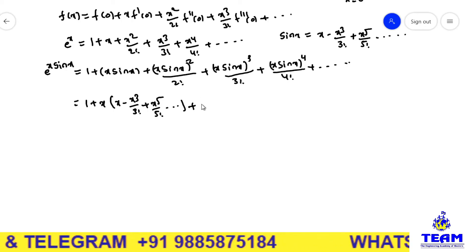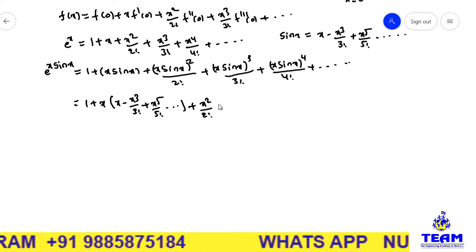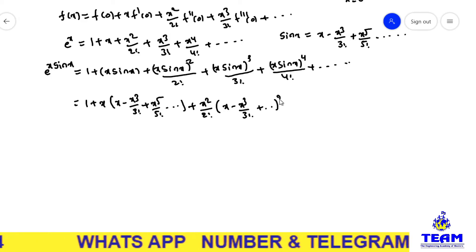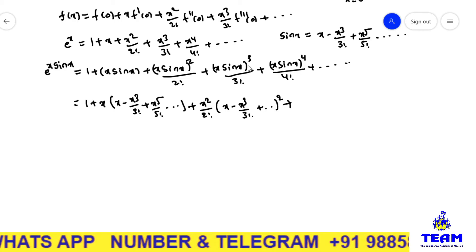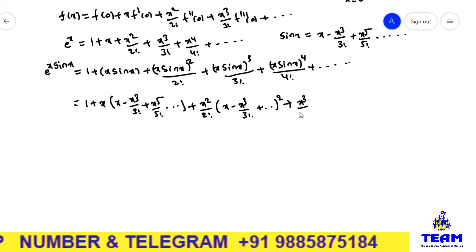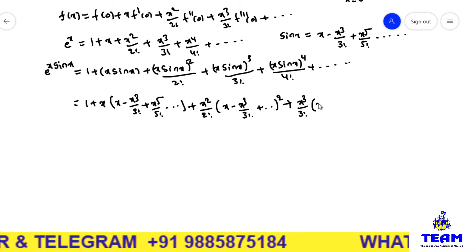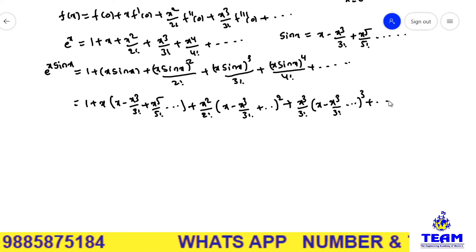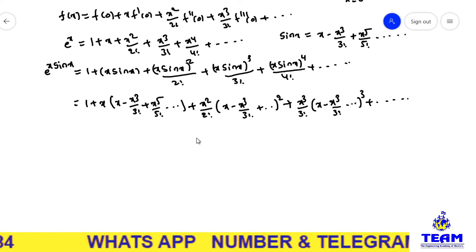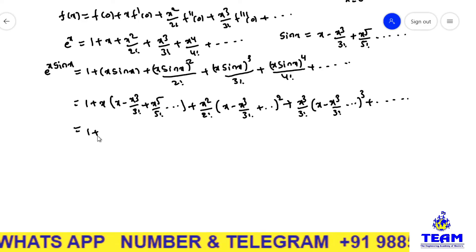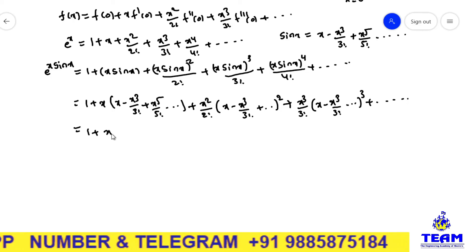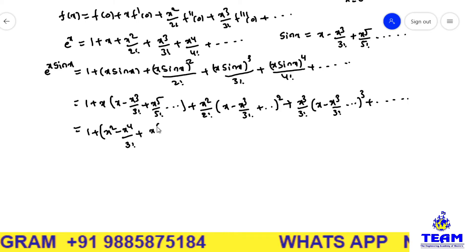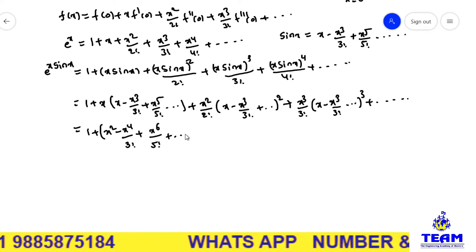Plus, splitting the squared term: x²/2! · (x − x³/3! + so on)² plus x³/3! · (x − x³/3! and so on)³ plus so on. Now multiplying x inside the first term gives x² − x⁴/3! + x⁶/5! and so on.